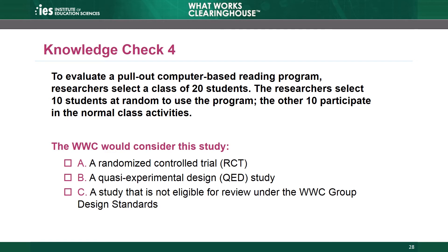Knowledge Check 4. To evaluate a pull-out computer-based reading program, researchers select a class of 20 students. The researchers select 10 students at random to use the program; the other 10 participate in normal class activities. The WWC would consider this study: A, a randomized control trial; B, a quasi-experimental design study; or C, a study not eligible for review under the WWC group design standards. The answer is A — this is an RCT. The study randomly assigned all 20 students in the experiment. Assignment was entirely by chance and each unit had a non-zero probability of assignment to each group. The study text doesn't provide any reason to question the randomization process, so we can conclude this is an RCT.